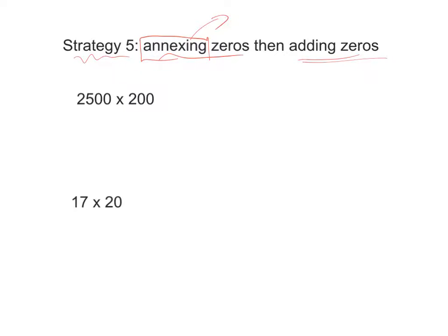The first example is 2,500 times 200. Some of us might look at this and say, hey, these are big numbers. I'm not sure what to do. Well, the first step here is annex zeros. So get rid of some zeros. I'm going to just put a line through the first zero, second zero, third zero, fourth zero. This only works for zeros that are on the end of the numbers.